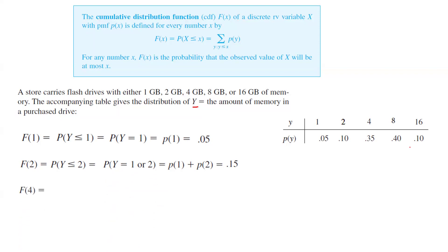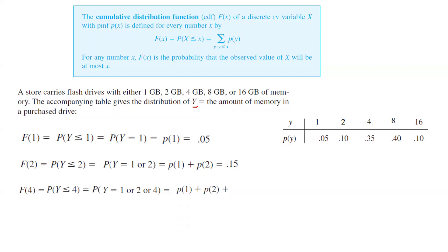Let's find the probability that Y is less than or equal to 4, or F(4). This is the probability that Y is 1, 2, or 4 — we don't have a 3 — which is the probability of 1 plus probability of 2 plus probability of 4, giving 50%.